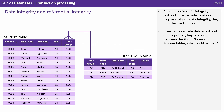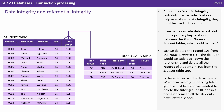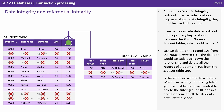Although referential integrity restraints like cascade delete can help maintain data integrity, they must be used with caution. If we had a cascade delete restraint on the primary key relationship between the tutor group and student tables, deleting the record 10e from the tutor group table would cascade and delete all records of students in 10e from the student table too. Just because we wanted to delete tutor group 10e doesn't necessarily mean all the students have left the school.